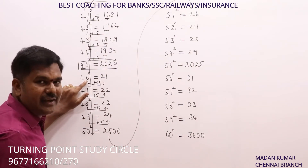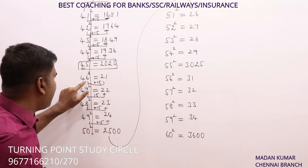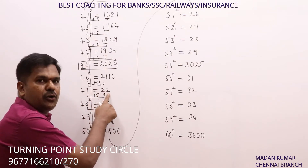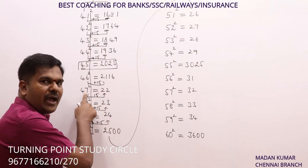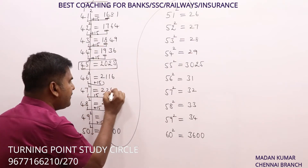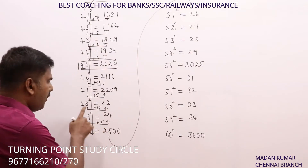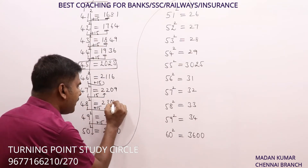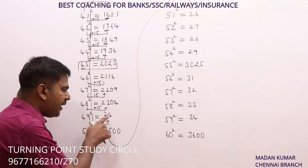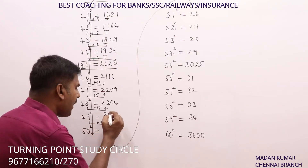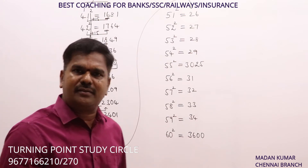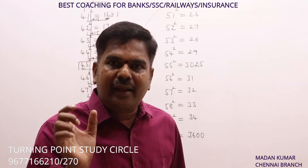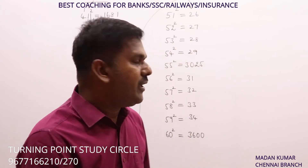46² → 6 + 15 = 21, 10 − 6 = 4, 4² = 16, answer: 2116. 47² → 7 + 15 = 22, 10 − 7 = 3, 3² = 09, answer: 2209. 48² → 8 + 15 = 23, 10 − 8 = 2, 2² = 04, answer: 2304. 49² → 9 + 15 = 24, 10 − 9 = 1, 1² = 01, answer: 2401. The rule for 41–50: plus 15 and indirect square.